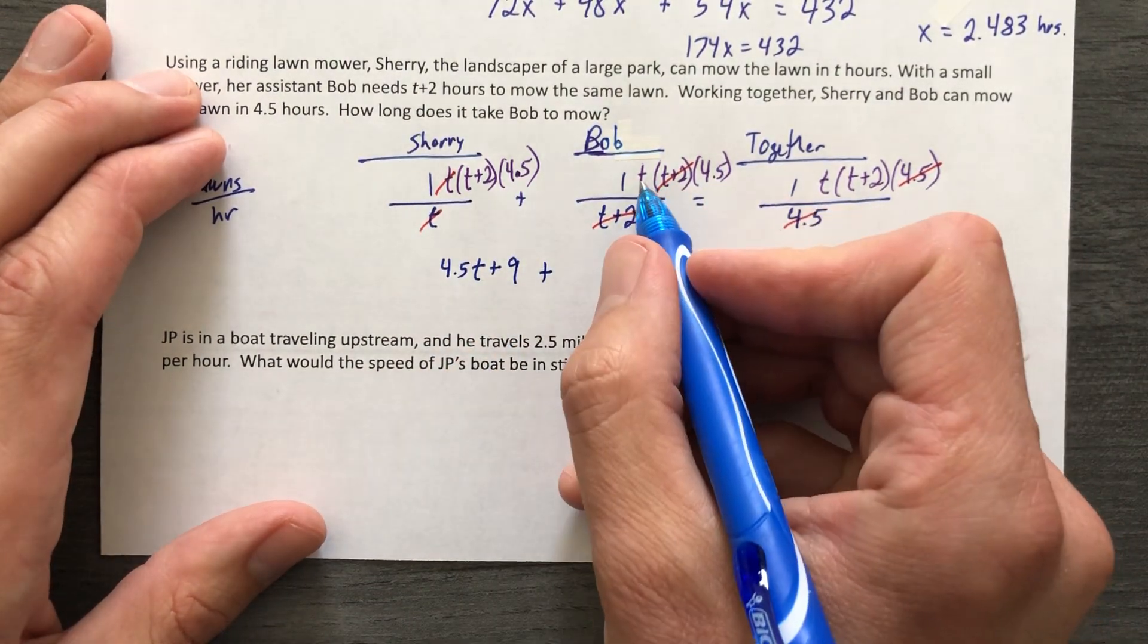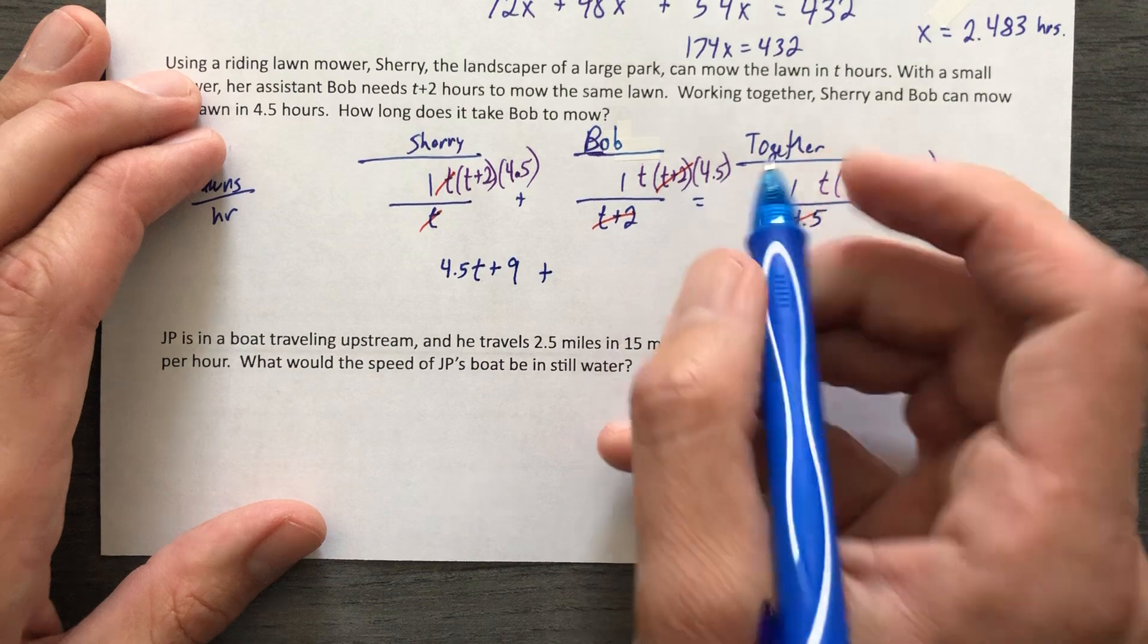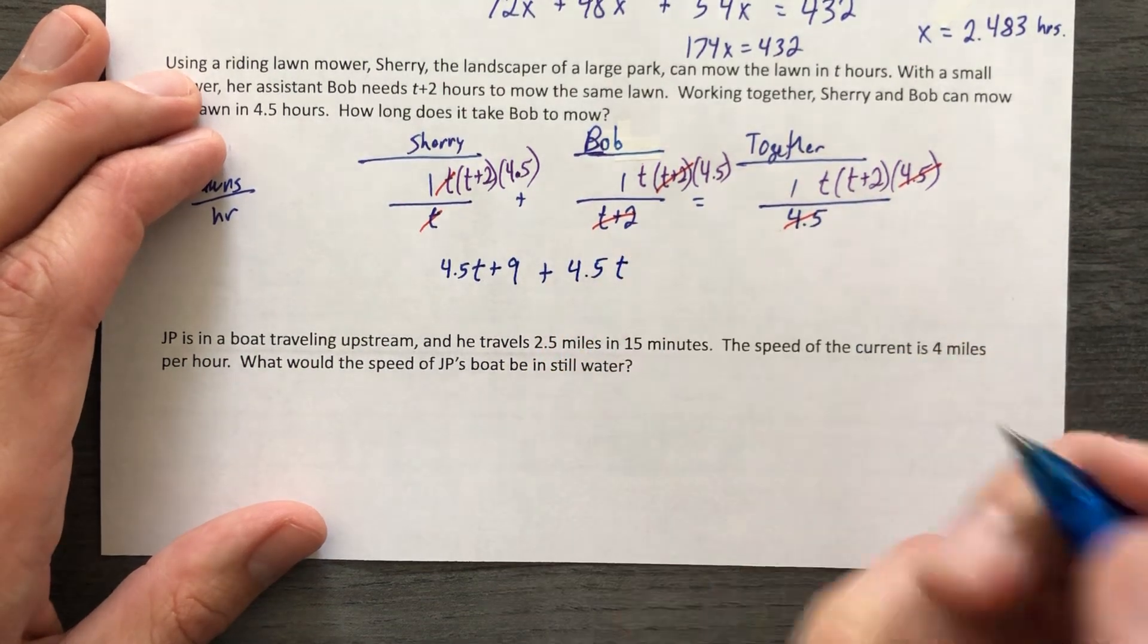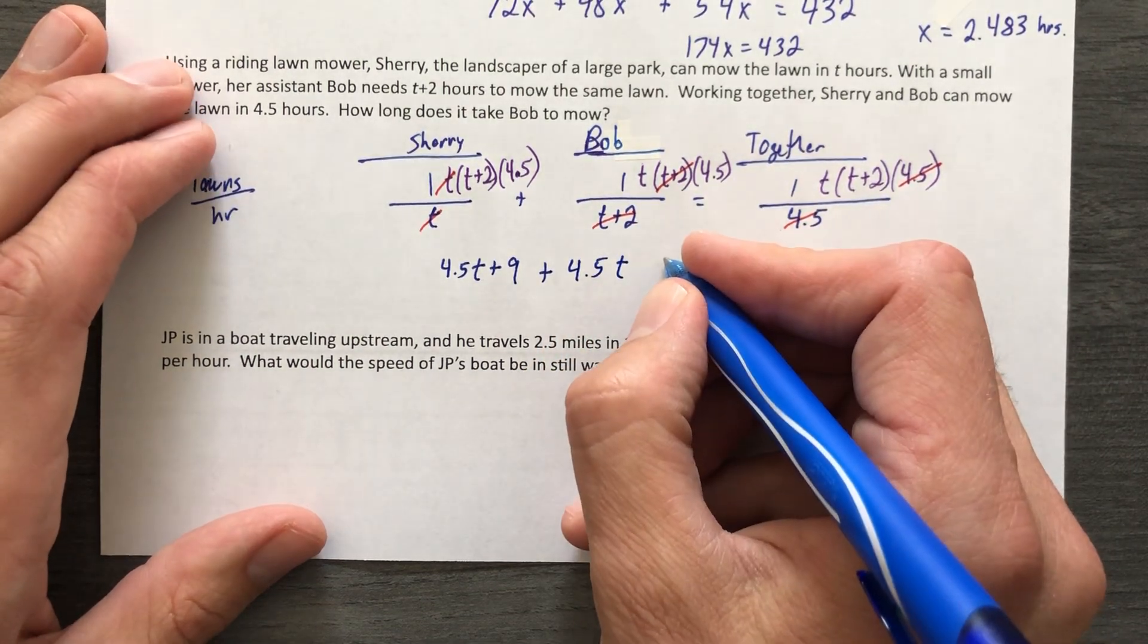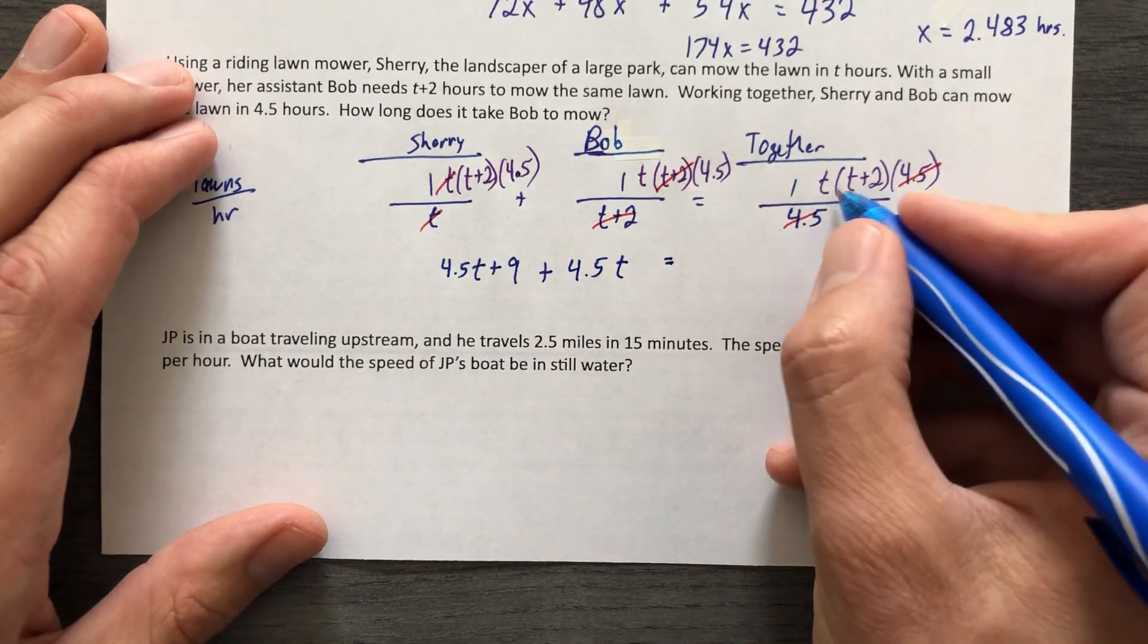Okay, that leaves us also here with one times T times one times 4.5, so 4.5T.